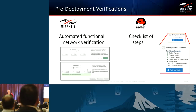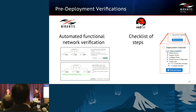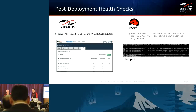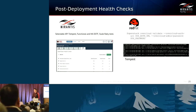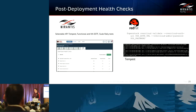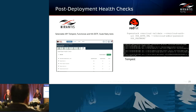On pre-deployment verification: Mirantis makes an active attempt to test all created networks and ensure services can function, actually performing those tests. On the Red Hat side, the checklist of steps helps guide you through what needs to be done, but it doesn't perform any actual functional verification. On post-deployment testing: Mirantis provides dozens of individually selectable tests through the Fuel UI covering sanity, functional, high availability, cluster configuration, and API platform certification. On the Red Hat side, there's the very thorough Tempest test suite, but all run manually through CLI.